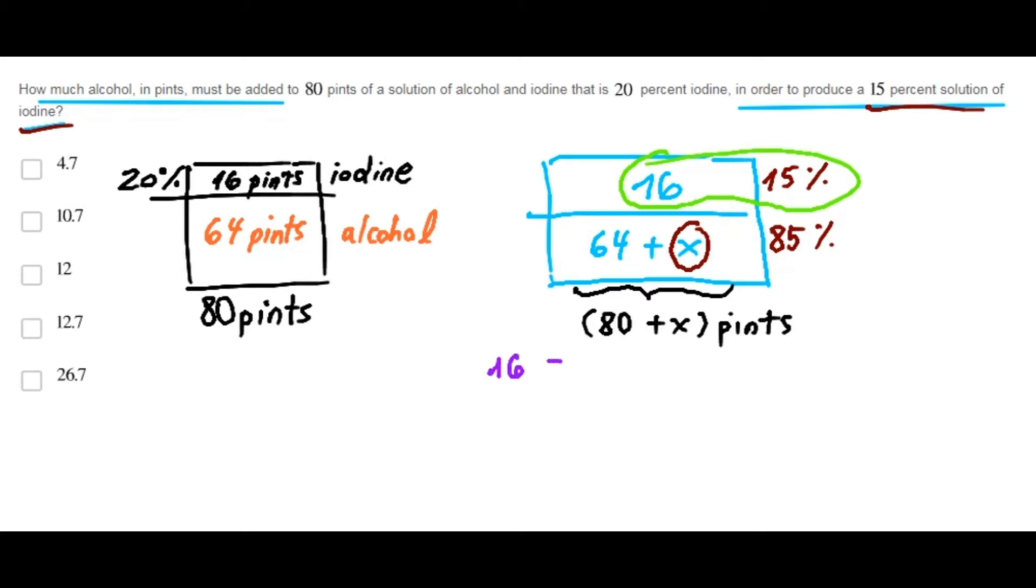Therefore, 16 equals 15% of 80 plus X. This can be reduced to 3 over 20.